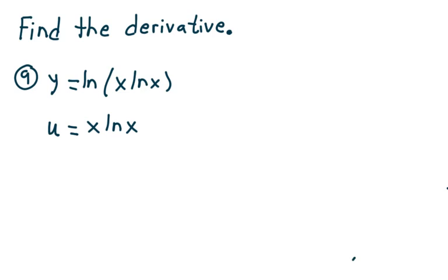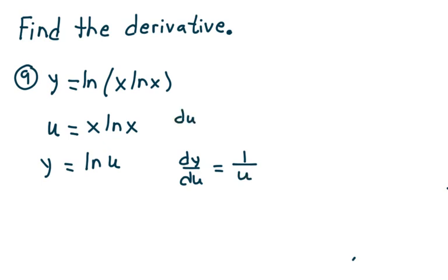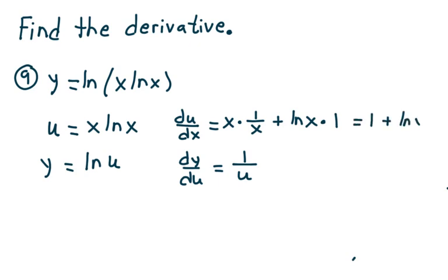What is y in terms of u? Well, y is equal to natural log of u. dy/du is equal to 1 over u. Then du/dx by the product rule is equal to x times 1 over x plus natural log of x times 1, which equals 1 plus the natural log of x.